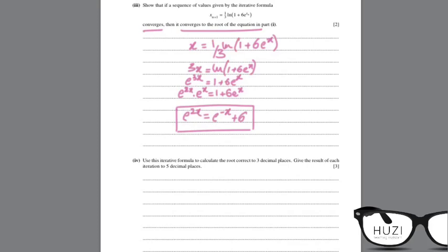Part 4. Part 4 uses iterative formula to calculate the root character 3 decimal places. Give each result of each iteration to 5 decimal places. You take any initial value x1 equals to say you take it as 1 and then you place it in the equation and then you keep getting iterative results till the 5 decimal places stop changing. Let me just do the first 2. When x equals to 1 your second result is 0.95042.